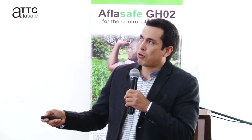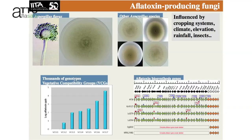The major causal agent of contamination is Aspergillus flavus. Other Aspergillus species occur in some areas, and the composition of these communities is influenced by cropping systems, climate, elevation, rainfall, and also other factors.